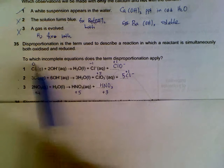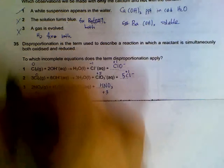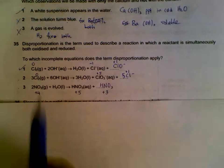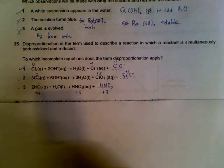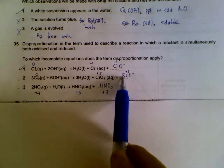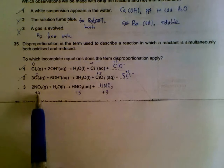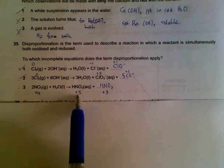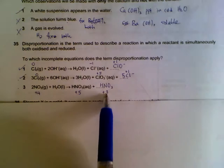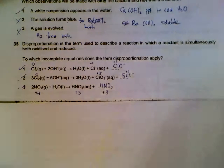So the first one, there is a reduction and oxidation at the same time, which is disproportionation. The second one is oxidized and also reduced. The third one, nitrogen is oxidized and reduced. So all three are disproportionation reactions.